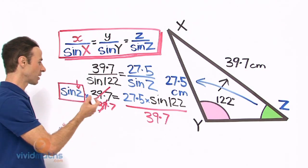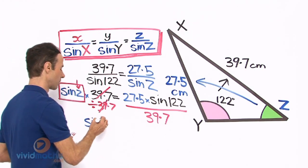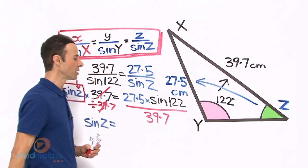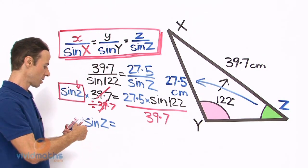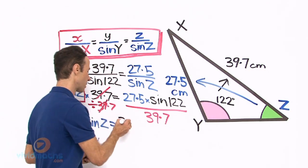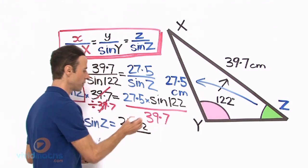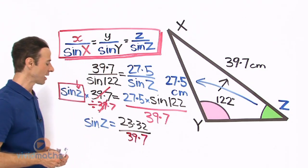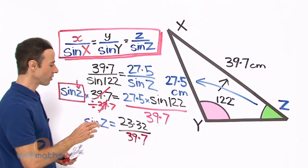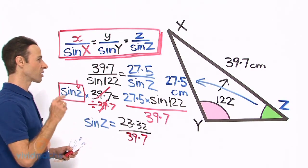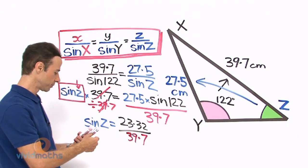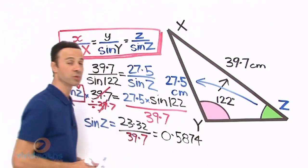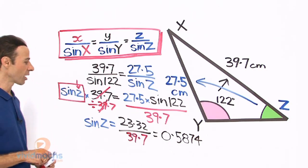Let us put this into the calculator now. We calculate 27.5 times sine 122, which gives 23.32. Then 23.32 divided by 39.7 gives us 0.5874, taken to four decimal places. Now we need to find the angle Z from this value.